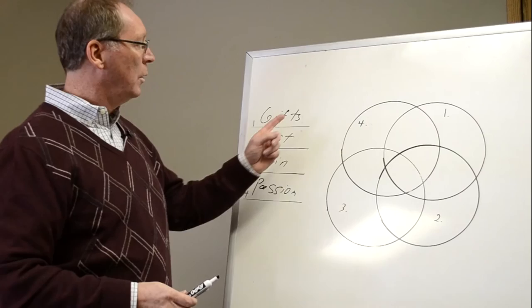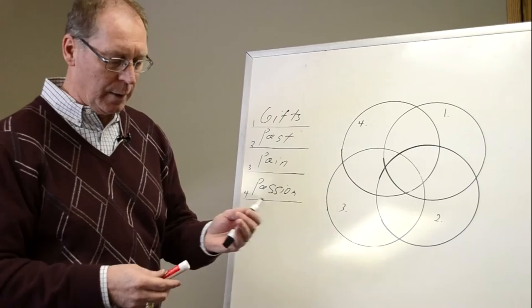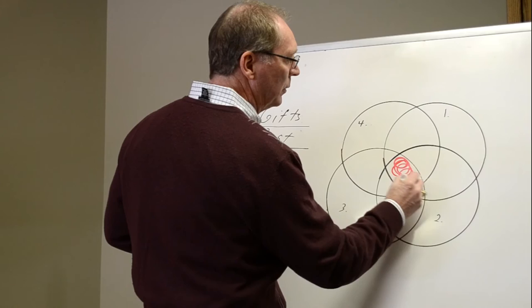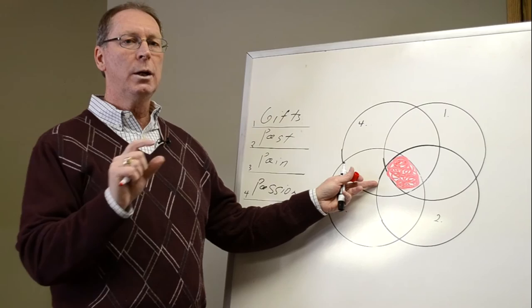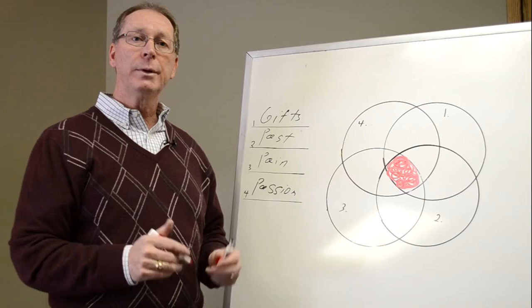So if you took gifts, past, pain, and passion, these four circles, and you worked on that, and where they overlap in this area, that's where you will find your sweet spot in life and it will get you very close to understanding your life's purpose. Once you understand your life purpose then you can build a life that counts and live a life that counts with intentionality. Hope this little diagram is helpful.